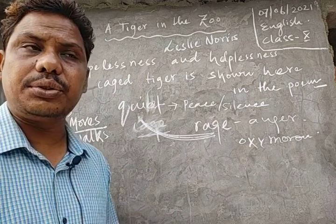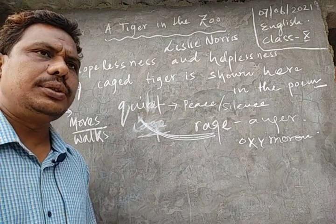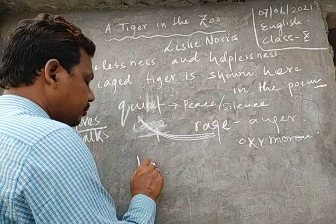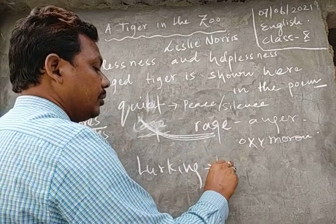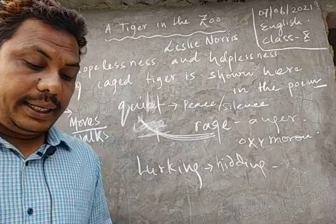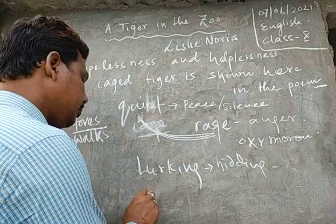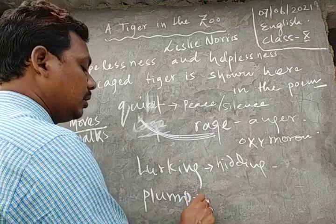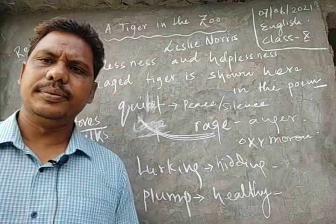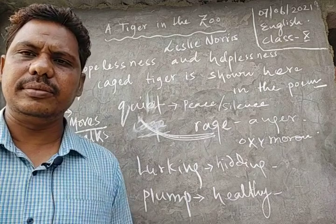He should be lurking in the shadow. Lurking means hiding. Sliding through the long rushes near the water hole, where the plump deer passes. Plump means healthy. The deer and other animals are there. The tiger attacks them — tiger attacks the plump deer. In the next stanza, the poet talks about how the tiger lives in nature.